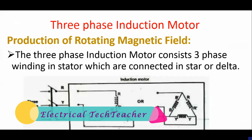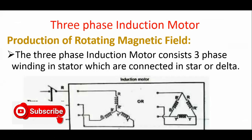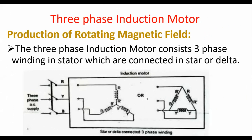Let us discuss how to produce a rotating magnetic field in the stator winding. In the stator, the three-phase winding is excited by the three-phase supply, and a rotating magnetic field is produced. That rotating magnetic field rotates with the synchronous speed and with constant magnitude.